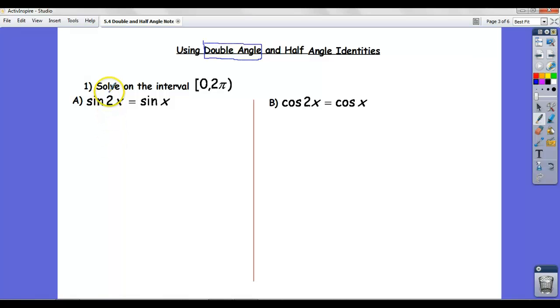Now first of all this 2x should really be in parentheses. Okay sine of the quantity 2x as opposed to the sine of 2 times x. That's not what we mean. So those parentheses really should be there. And I'll put them here too. So what do we think about when we solve equations? Well when we solve trig equations, the basic principles of algebra apply.